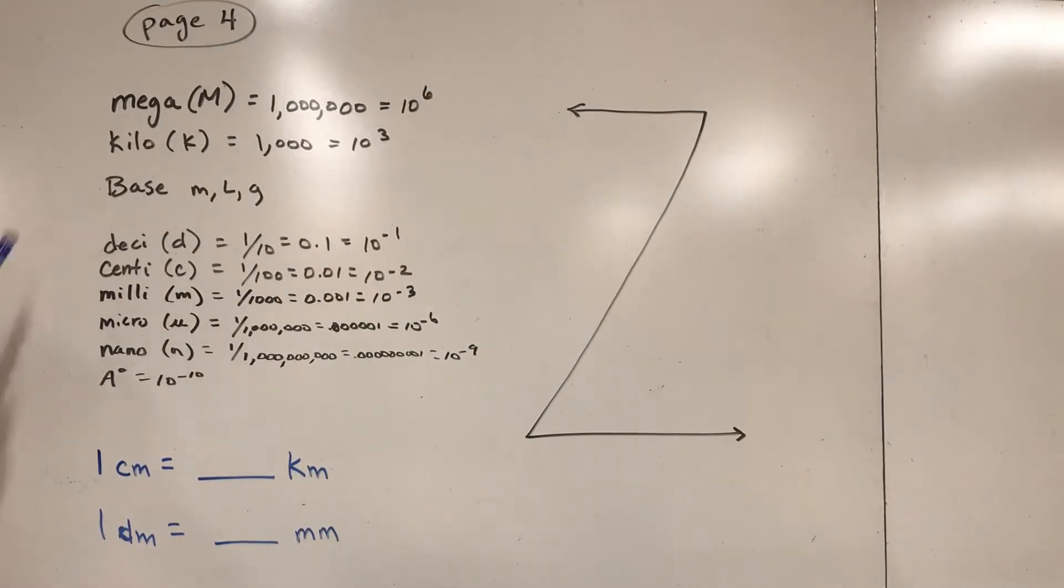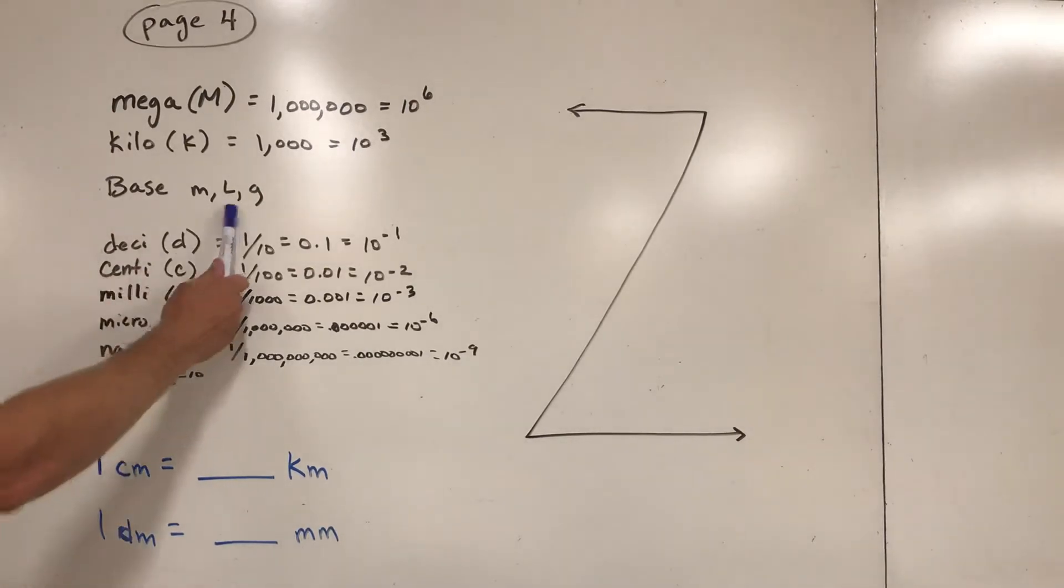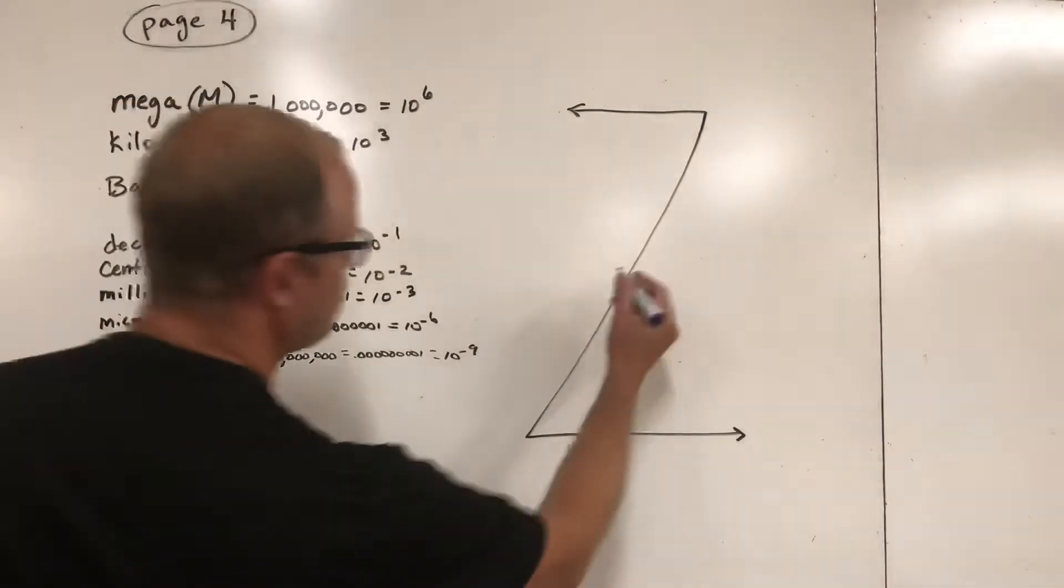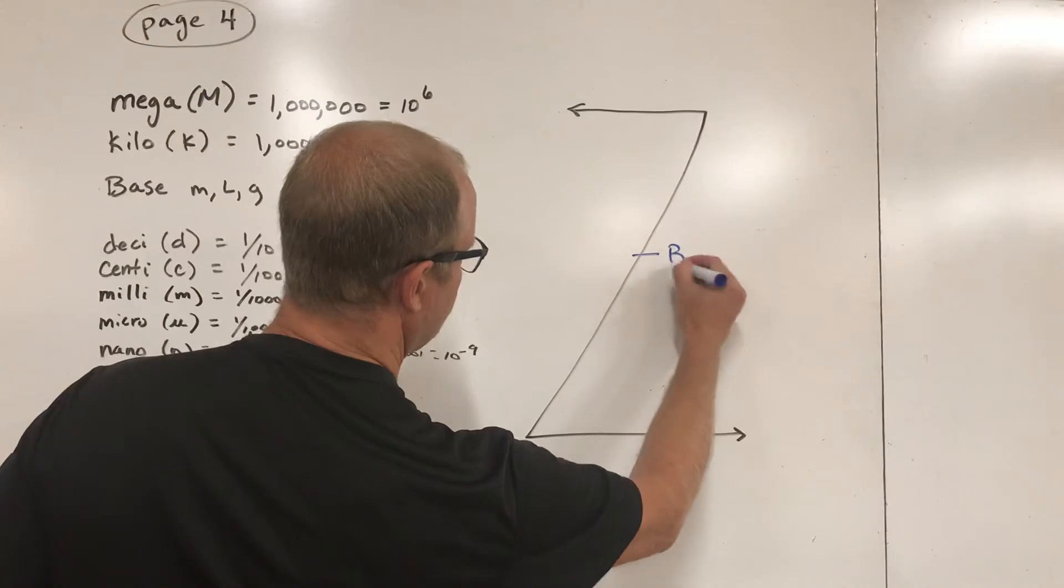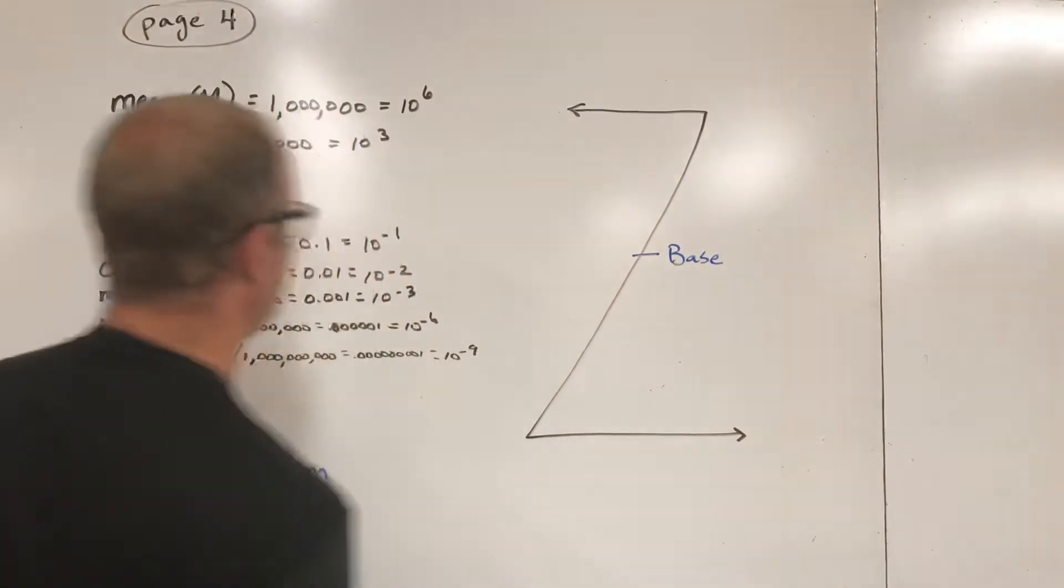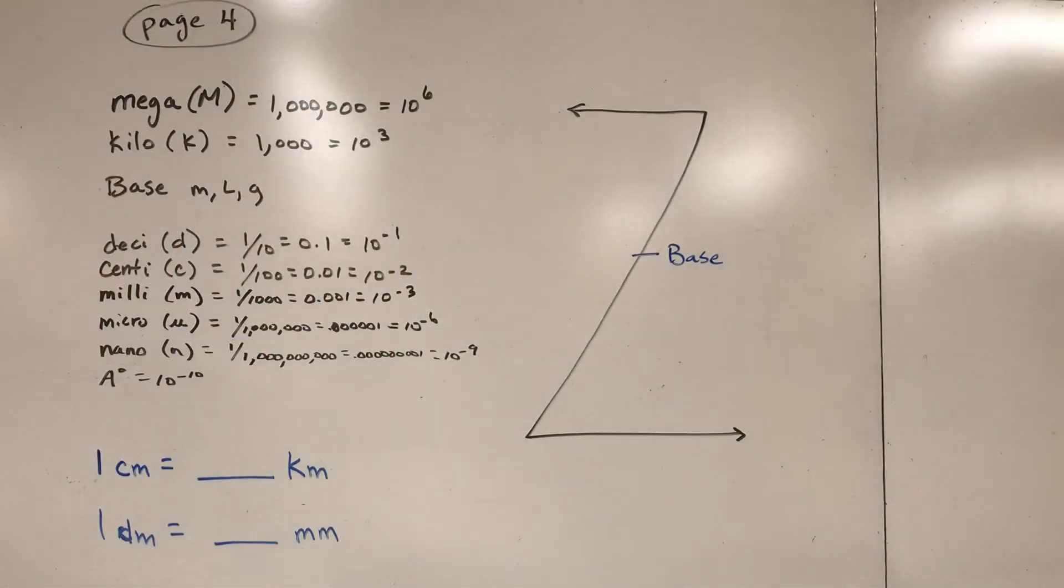First thing you need to recognize is it goes from top to bottom, biggest to smallest in order. It does skip some units. There are certain ones that are not labeled or we just don't use very often, so these are the only ones you really need to be concerned with. Now base units, most people are familiar with that, so I'm going to put base over here.